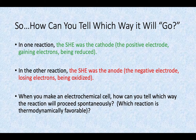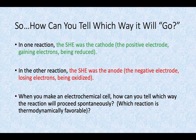How can you tell which way the electrons are going to flow? In one reaction, the SHE was the cathode — the positive electrode gaining the electrons, being reduced. And in the other reaction, the SHE was the anode — the negative electrode losing the electrons, being oxidized. How can you tell which way the electrons are going to flow? Spontaneously, how do you know which direction is the thermodynamically favorable reaction?